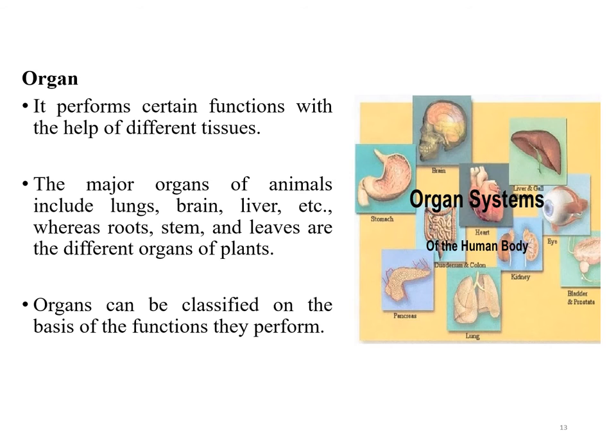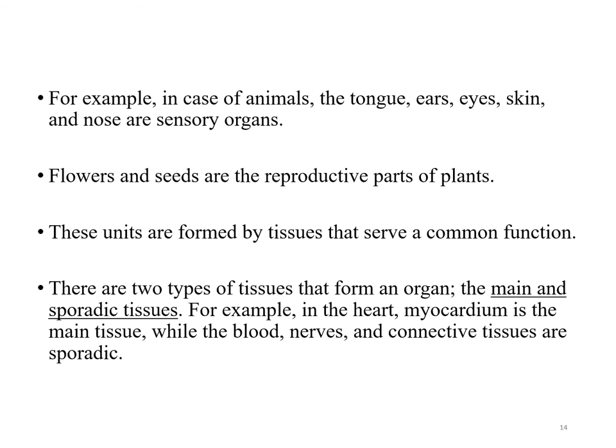Various tissue types combine to form a structured unit called an organ. The major organs of animals include the lungs, brain, and liver, whereas the root, stem, and leaves are the different organs of plants. Organs can be classified on the basis of the functions they perform. For example, in animals the ear, eyes, skin, and nose are sensory organs; flowers and seeds are the reproductive parts of plants. There are two types of tissues forming an organ: the main tissue and sporadic tissues. Sporadic tissues are scattered in occurrence — for example, in the heart, myocardium is the main tissue while blood, nerve, and connective tissues are sporadic.